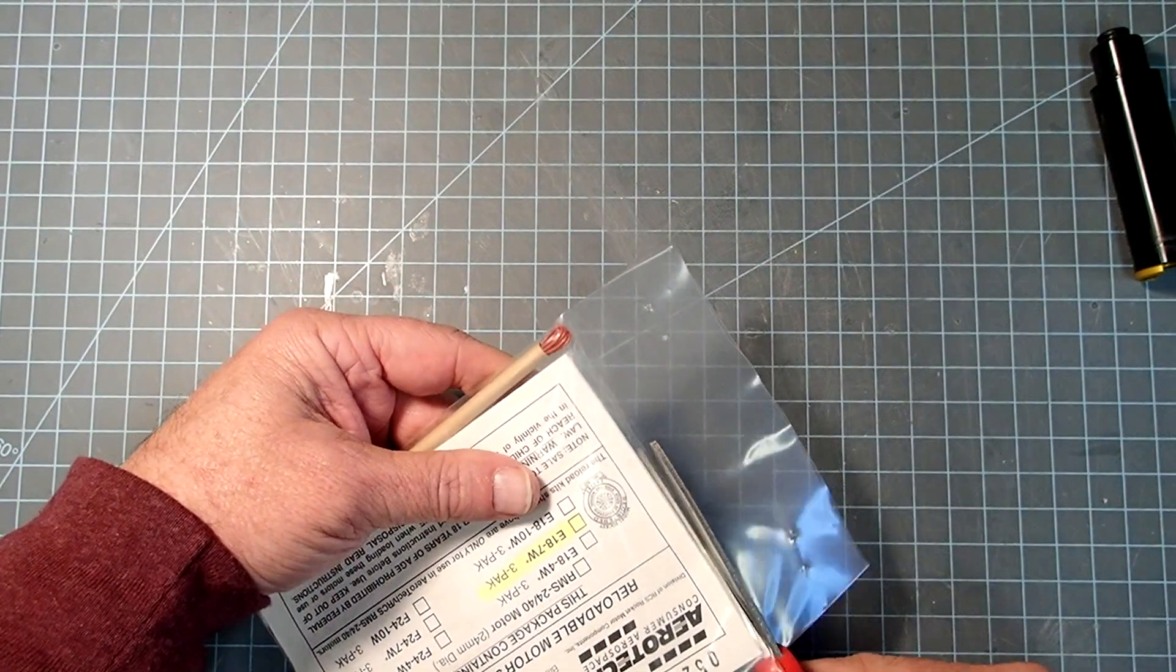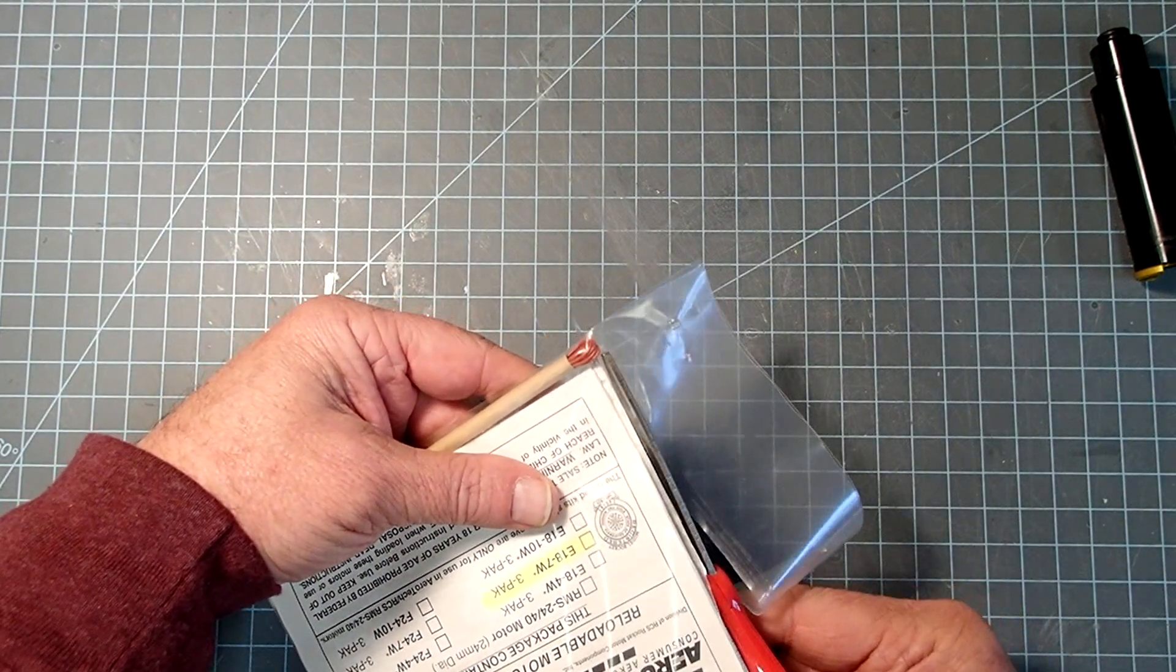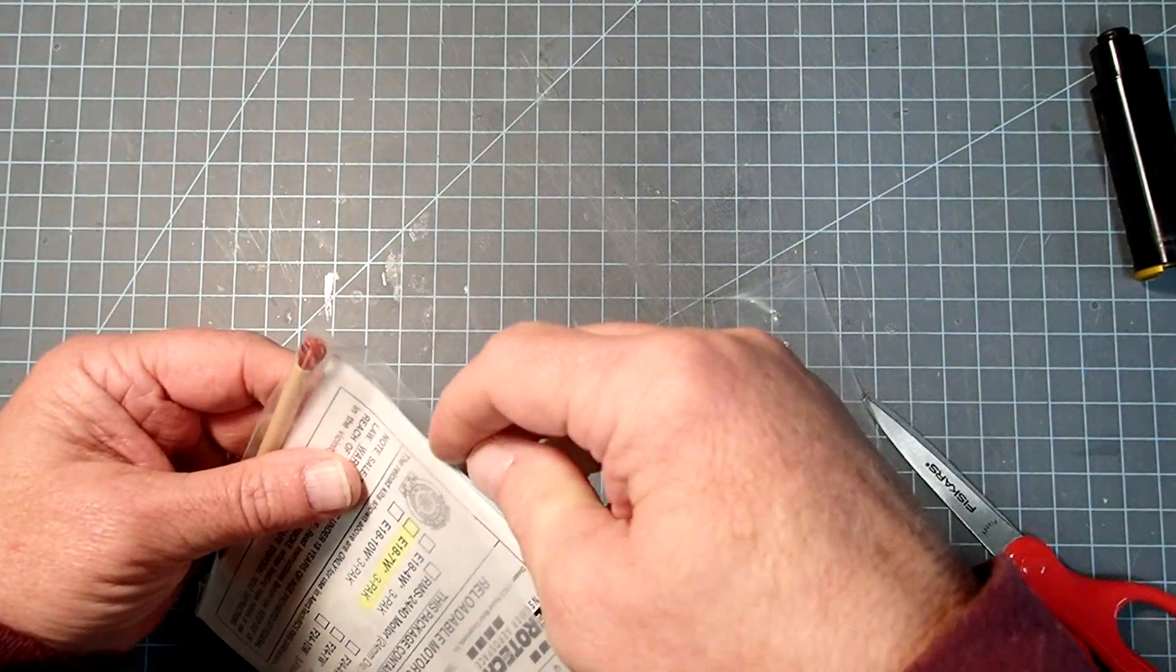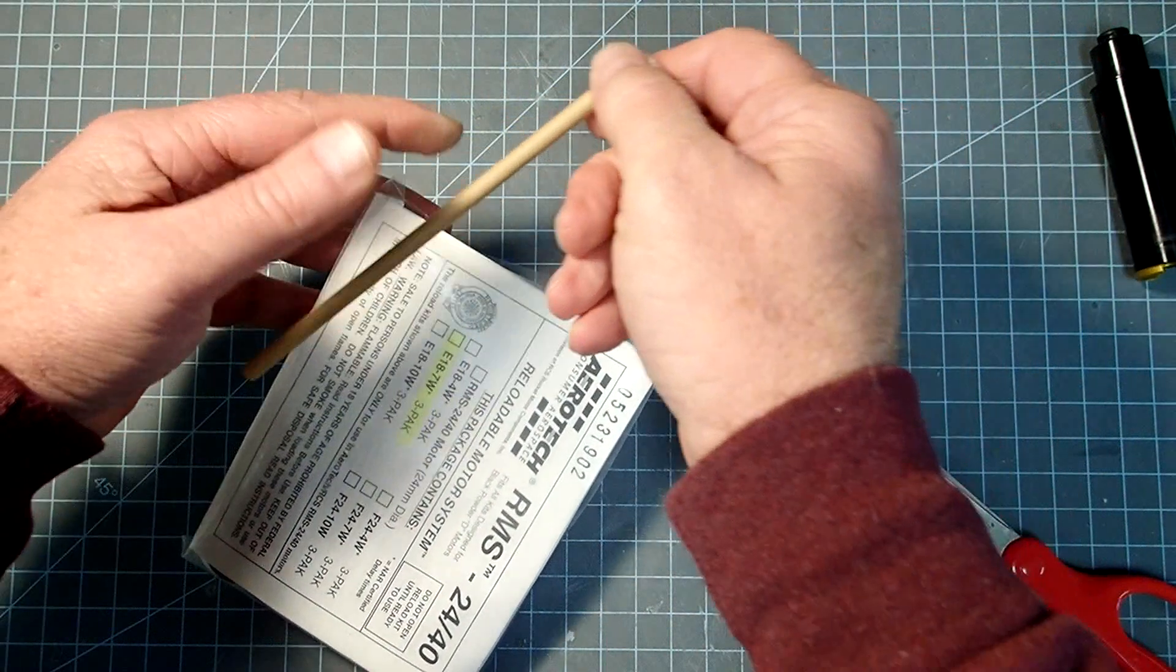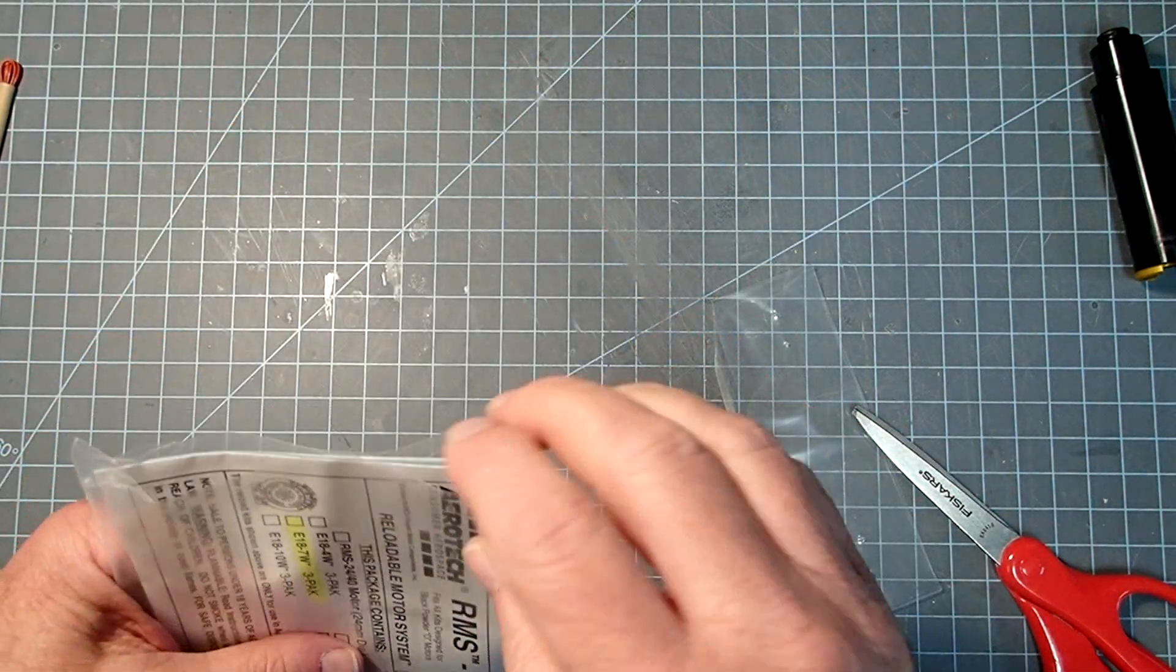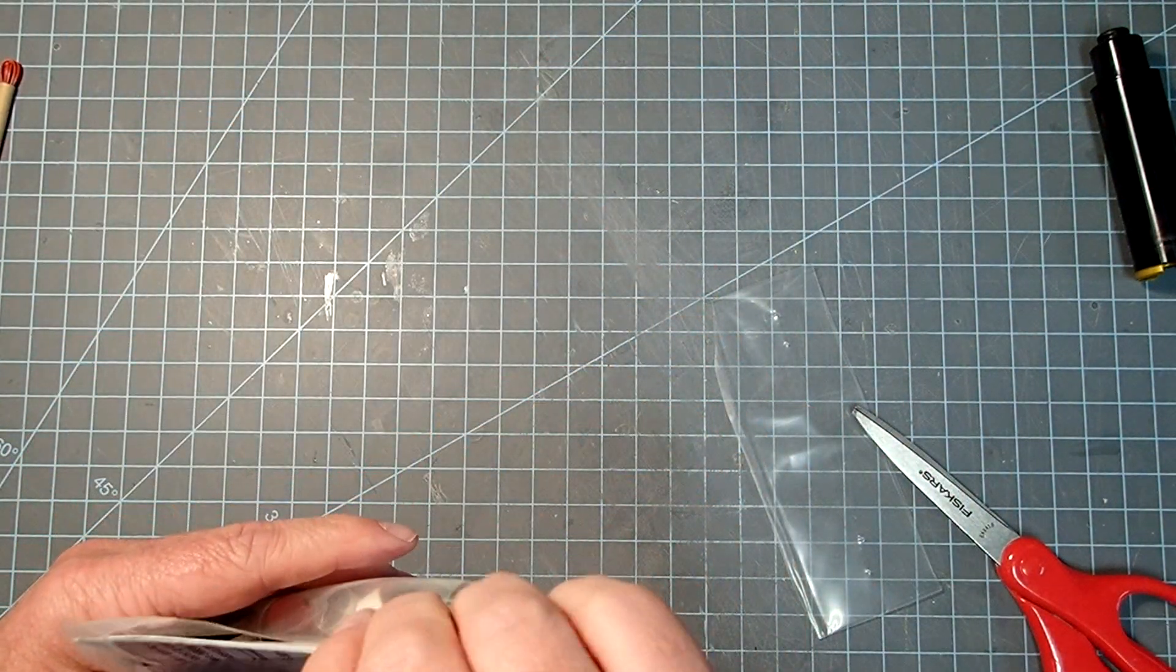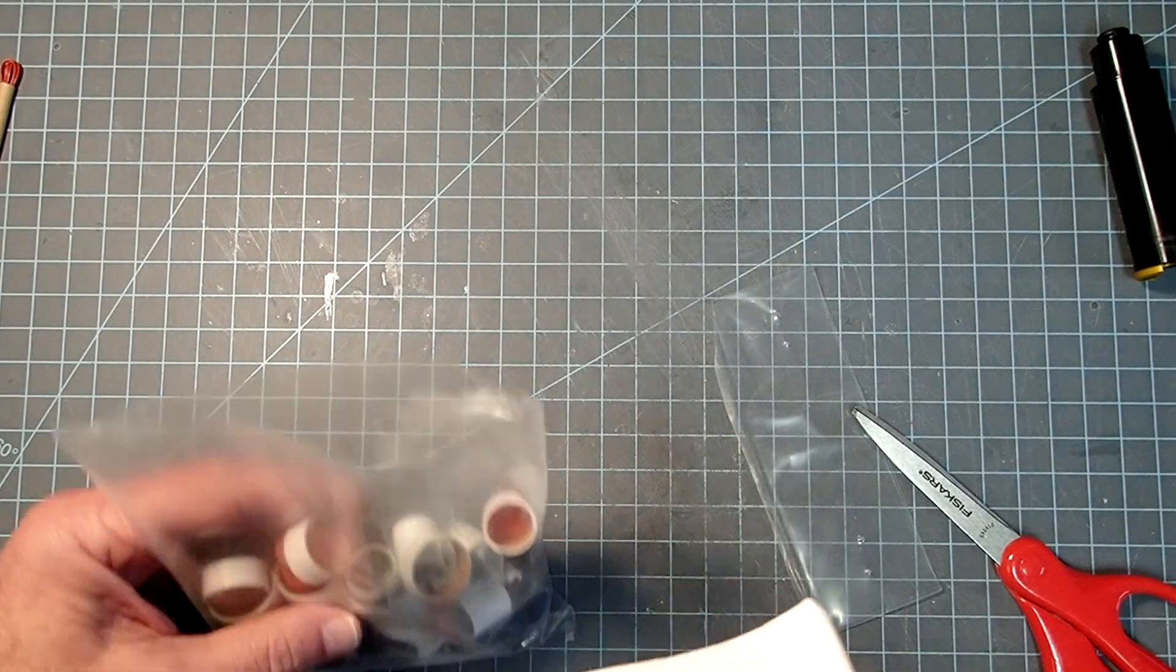Keep in mind, they've got the igniters situated right next to where I need to cut, so we definitely don't want to cut those. I'm going to set those aside as well.